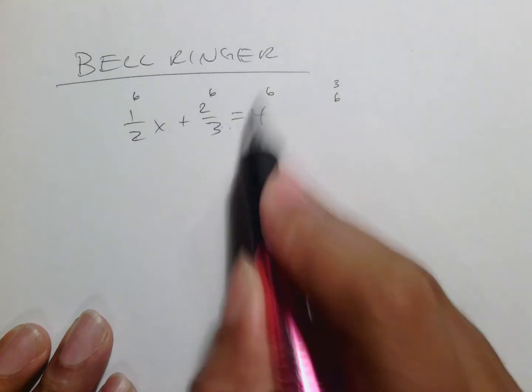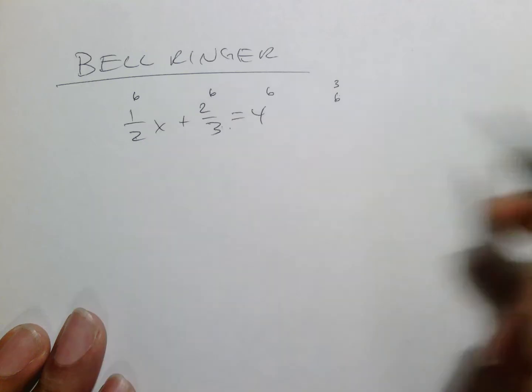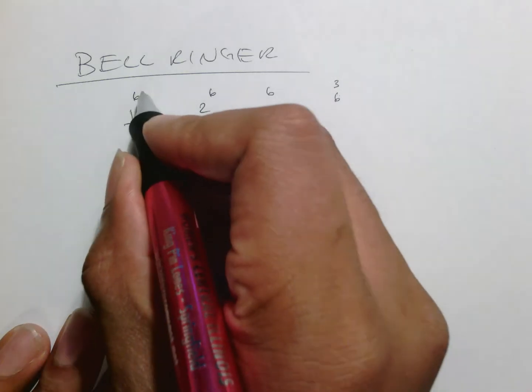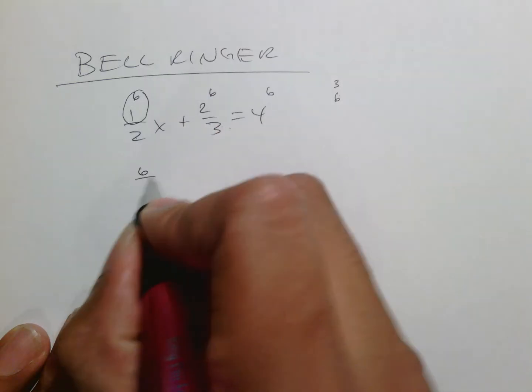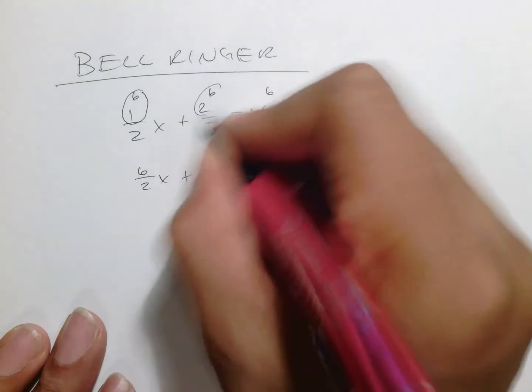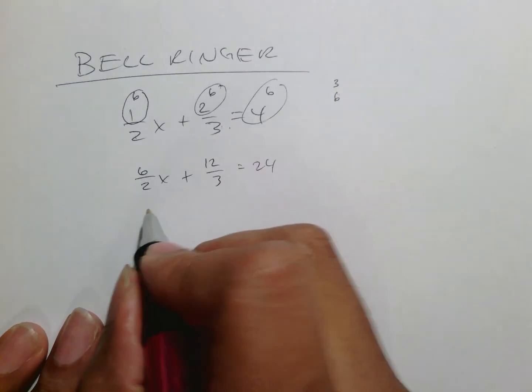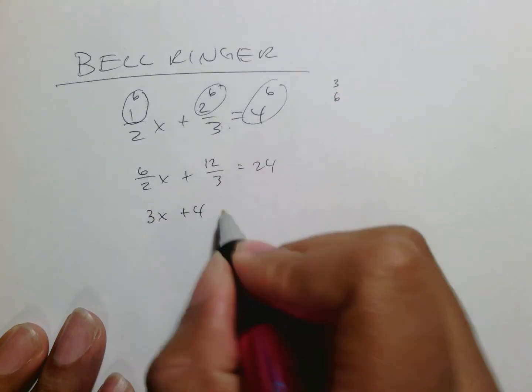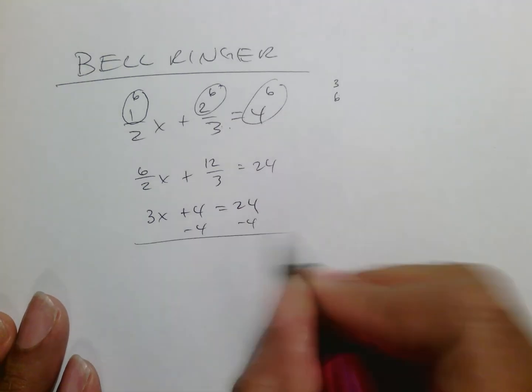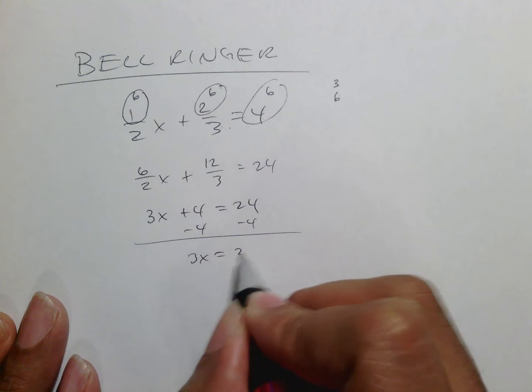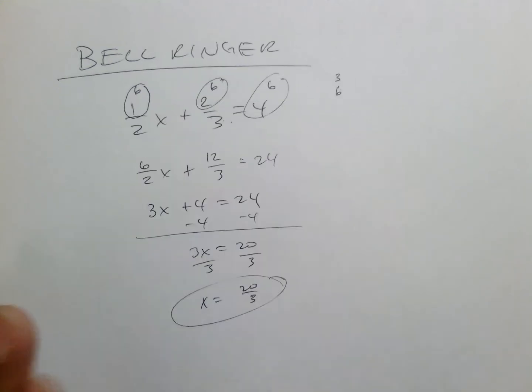The biggest mistake I see people do is that they forget to multiply the third thing by 6, but what you are doing is taking each one of those terms and multiplying and blowing them up, making them bigger. Then remember that you multiply the new number times the top, so you end up with 6 over 2x plus. That becomes 12 over 3 equals 24. 6 over 2 turns into 3x plus 4 equals 24, and from there we have a basic equation to solve. Subtracting 4 from both sides, dividing by 3 to get x equals 20 over 3.